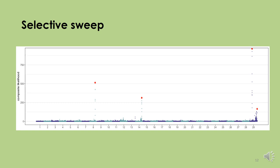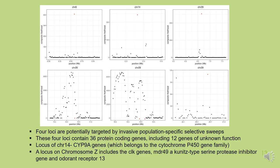We then observed selective sweeps in our study, and as we can see from this image, four loci were specific to the invasive populations. We found seven outliers in invasive populations in total: three in common with invasive populations, and four loci specific to invasive populations as shown in the previous slide. The identification of adaptively evolved genes in invasive populations suggests the possibility of insecticide resistance and host plant adaptation.